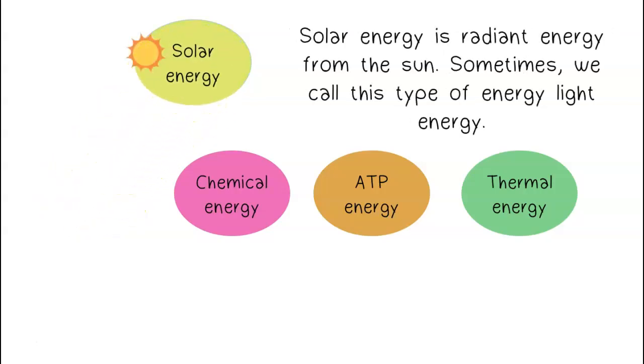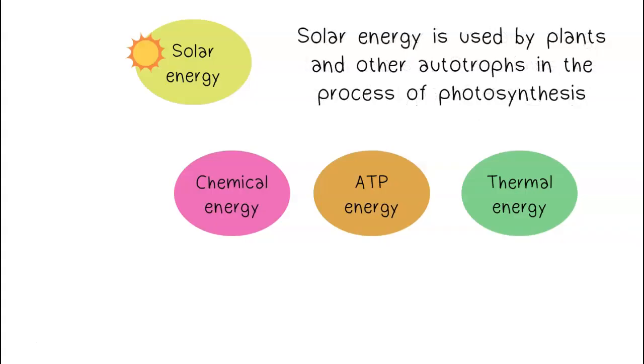Solar energy is radiant energy from the sun. Sometimes we call this type of energy light energy. Solar energy is used by plants and other autotrophs in the process of photosynthesis.